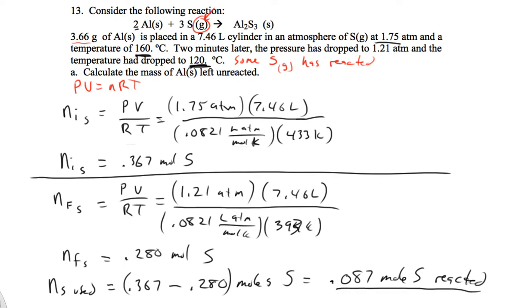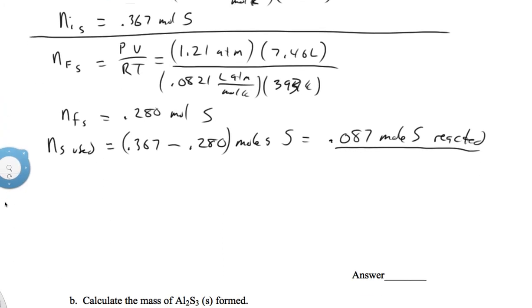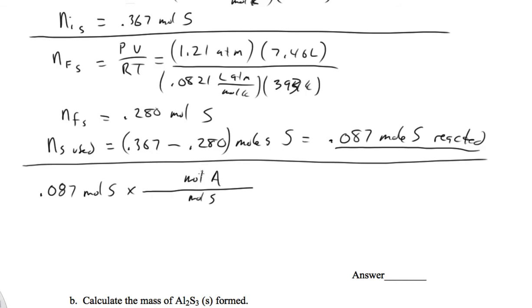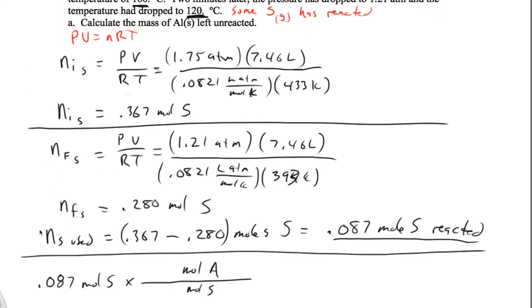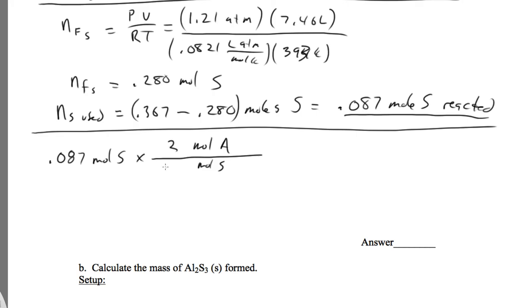Now of course we can plug that into our equation knowing the mole ratio from the balanced equation. So now we can figure out our moles of aluminum that reacted. I'm going to take 0.087 moles of sulfur, that's what reacted. We're going to put moles S down here and moles aluminum on top. From that balanced equation we see that it is 2 to 3. That's my mole ratio.